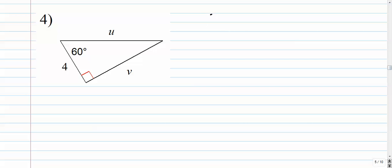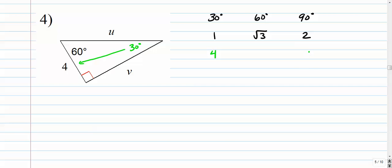Number 4: 30-60-90. Ratio: 1, radical 3, 2. What we're given here is the 30-degree side, which is 4. I immediately know the hypotenuse is double that — 4 times 2, which is 8. The long leg is simply the short leg times radical 3. So v equals 4 radical 3, and u equals 8.